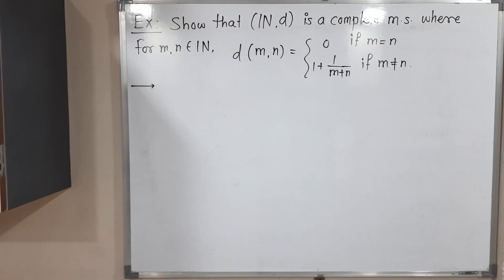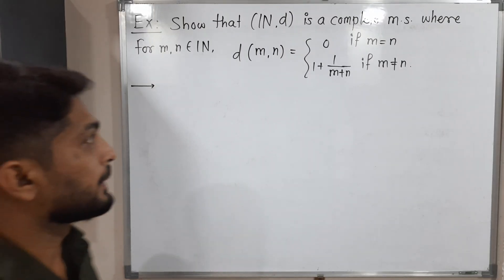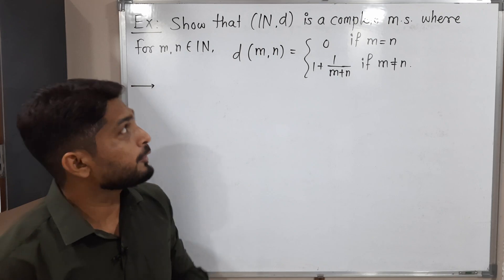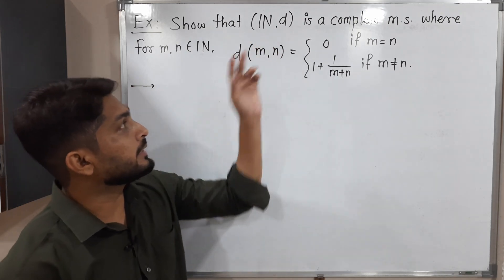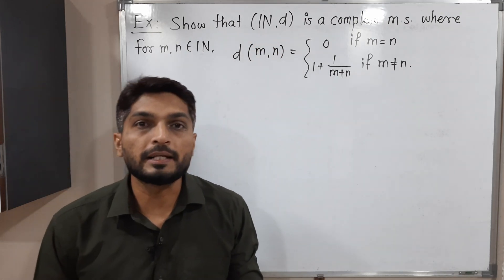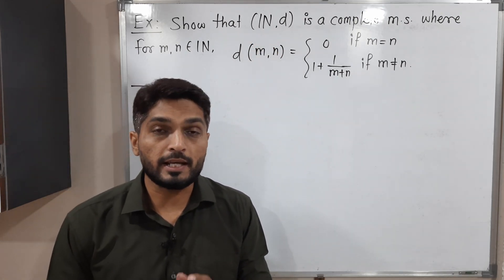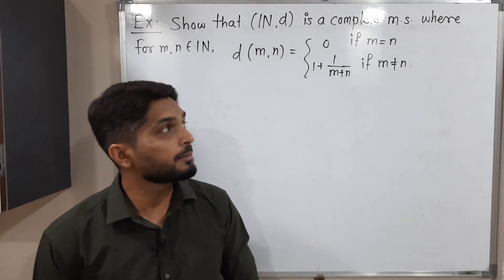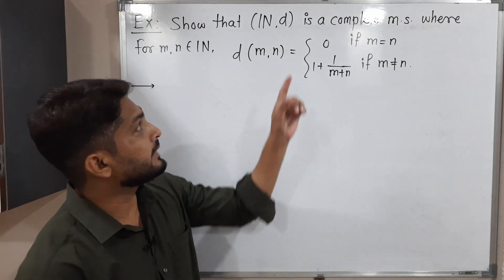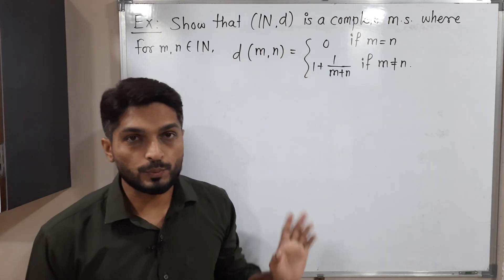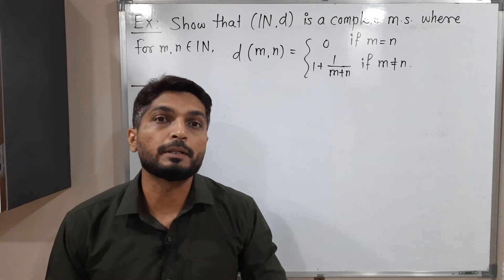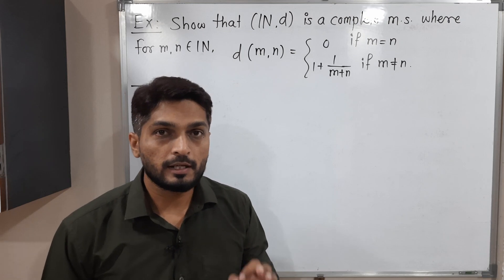Hi everyone. In this video we are going to discuss this example. We have to prove that ND is a complete metric space. N means the set of natural numbers, and D is a metric defined in this way. We have to prove that it is a complete metric space.